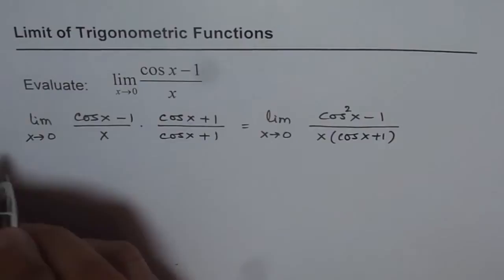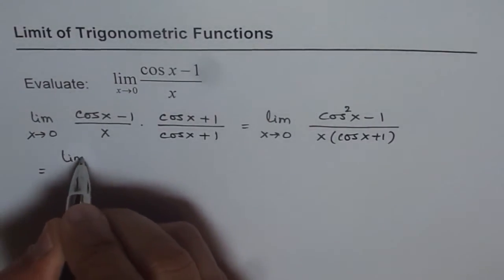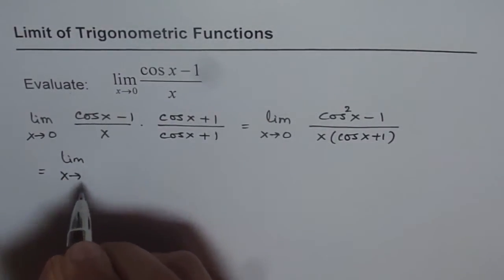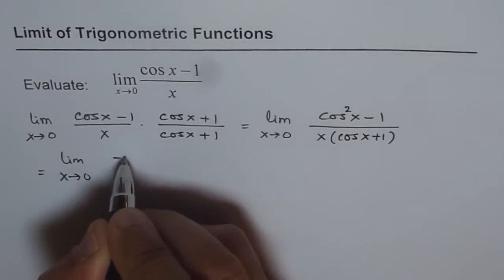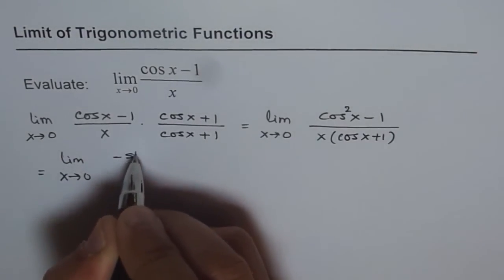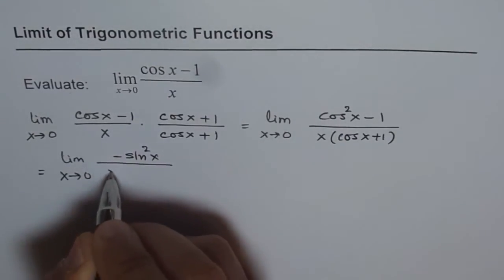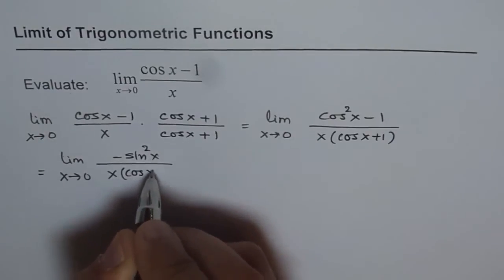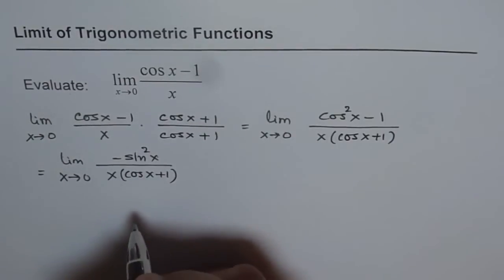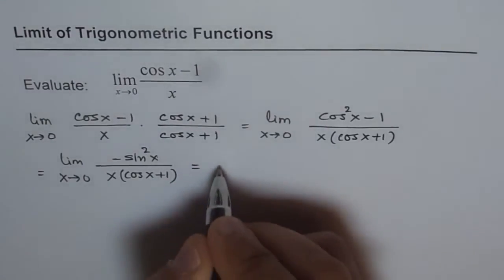Now, cos squared x minus 1 can be written as minus sine squared x. So we can write this as minus sine squared x over x times cos x plus 1.